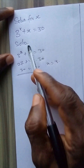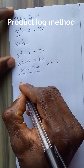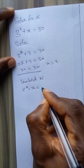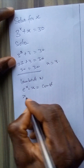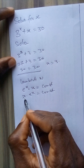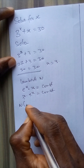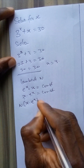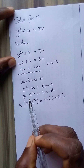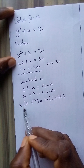However, if we are not able to guess the value of x, what do we need to do? I am going to use the product log method, or the Lambert W method. In this method, we have e to the power x times x equal to a constant, or x times e to the power x equals a constant. Since the unknown variable and the power of the exponent are the same, we can take W of both sides.